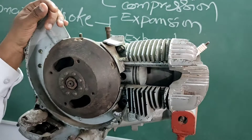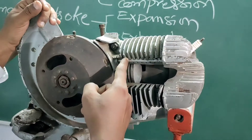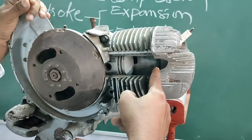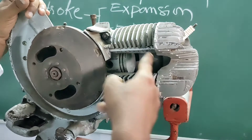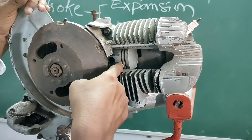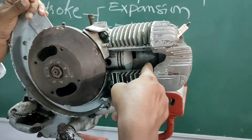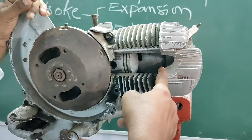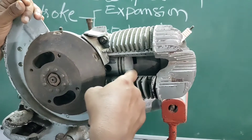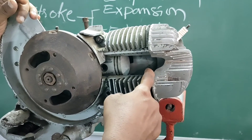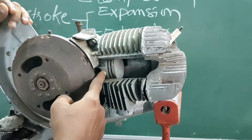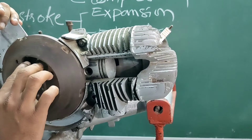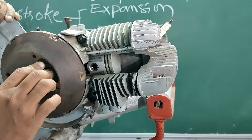During the upward stroke, the piston moves from BDC to TDC. The piston is at BDC, then the piston is at TDC. The stroke is the upward stroke. The piston moves upward.